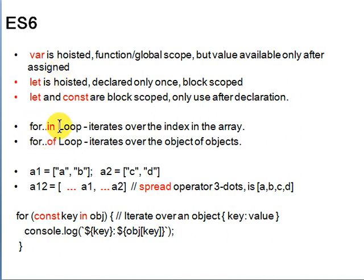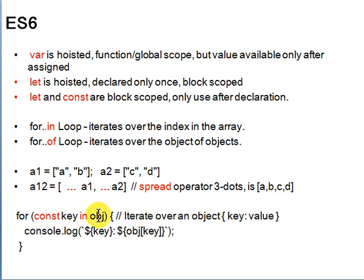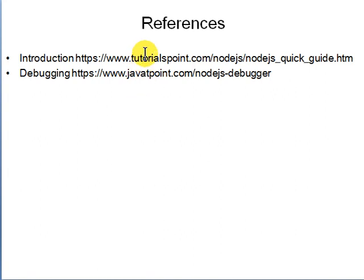There are two kinds of for loops: 'for...in' iterates over the indices of an array, and 'for...of' iterates over the objects. Arrays can be concatenated using the spread operator (triple dot): 'let a = [...a1, ...a2]' merges them. When iterating with 'for (const key in object)', 'const' ensures the key won't change inside the loop. Backtick template literals allow variable interpolation using '${variable}' syntax. More resources are available on TutorialsPoint, JavaPoint, and Stack Overflow.